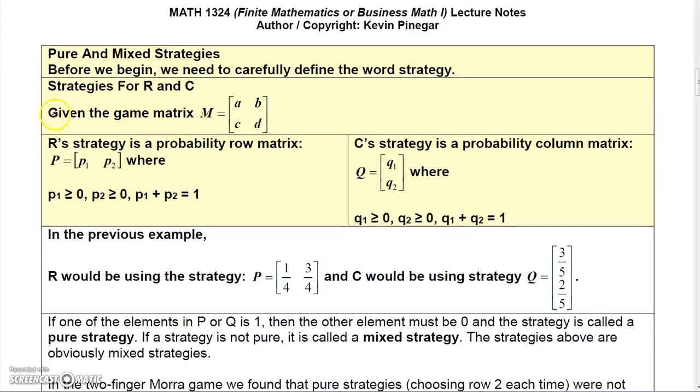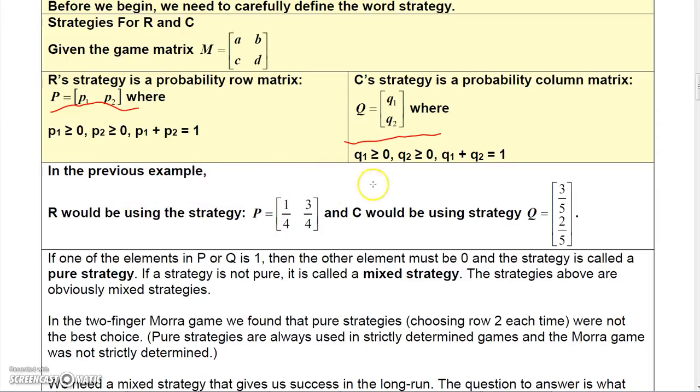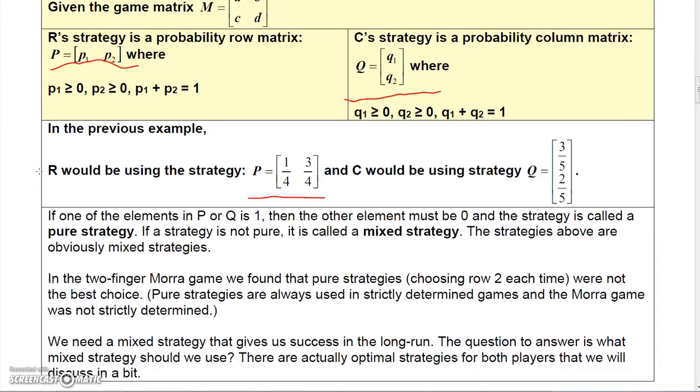So before we begin, let's define some of the strategy. We're given the game matrix M here. And let's say our strategy is P1 and P2. So this is like the one-fourth and the three-fourths. So with a one-fourth probability to choose one row and a three-fourth probability to choose another. And C's strategy would be Q1 and Q2, where Q1 might be the three-fifths and Q2 be the two-fifths. So in that case, then R would be using this strategy with a one-fourth probability row one and a three-fourth probability row two. And C would be using this strategy with a three-fifths probability for column one and a two-fifths probability for column two.